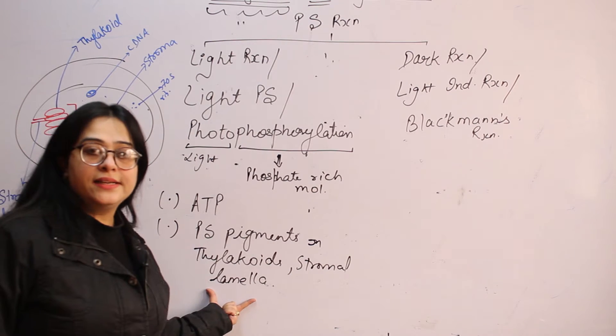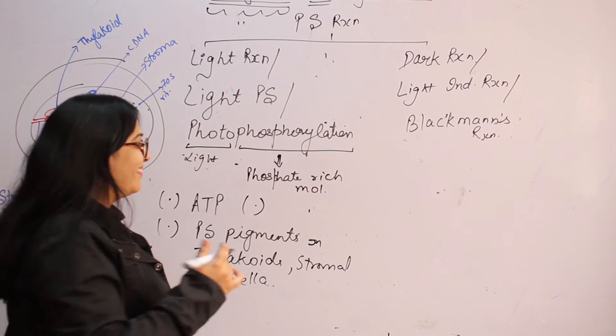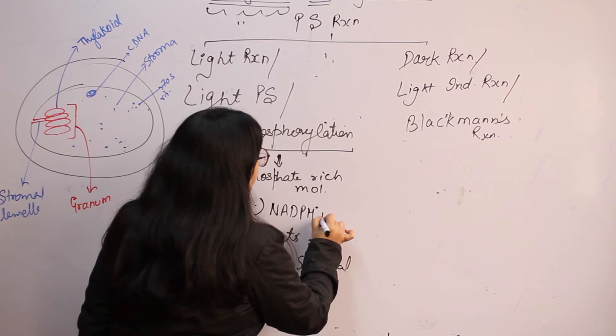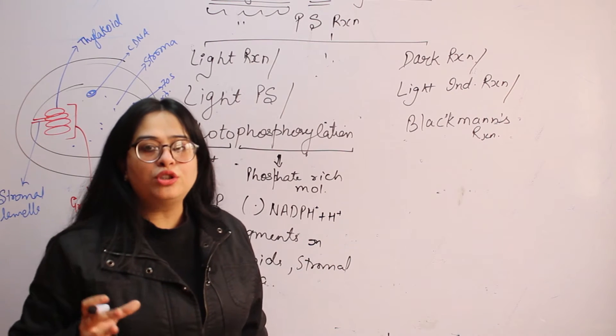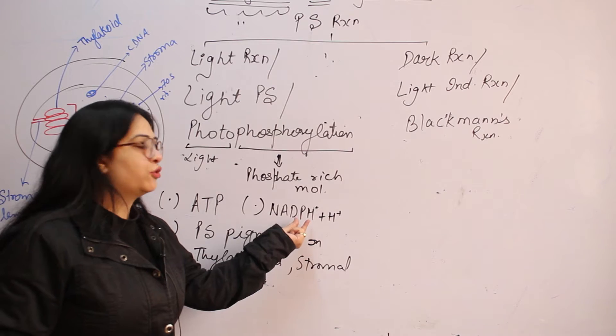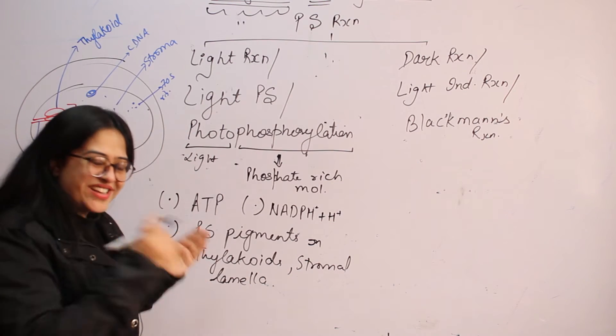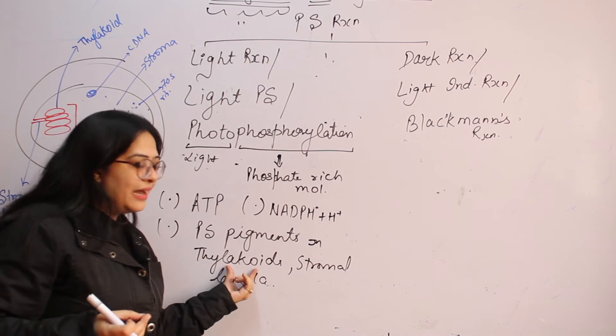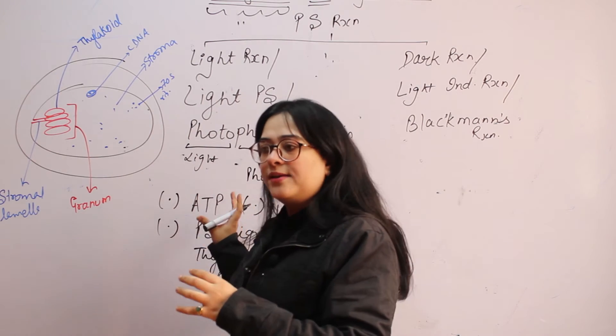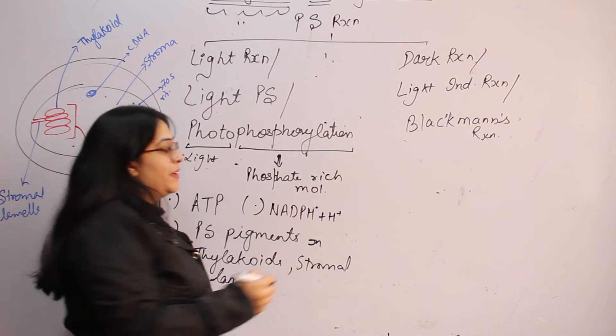With the help of these things, ATP as a source of energy will be produced. Along with this, in this light reaction, NADPH will be produced as NADPH plus H plus which is the right way to write it. So NADPH will be produced as a reducing source or as a reducing power. This is nicotinamide adenine dinucleotide phosphate hydrogen. So ATP will be used as a source of energy in this reaction.